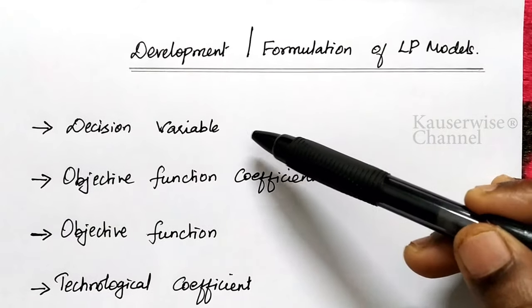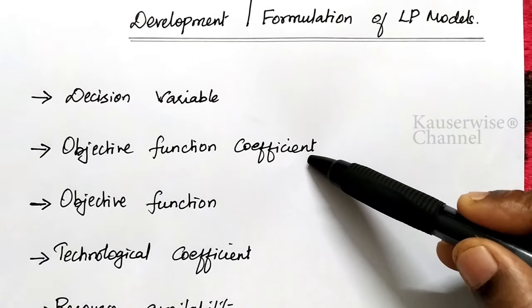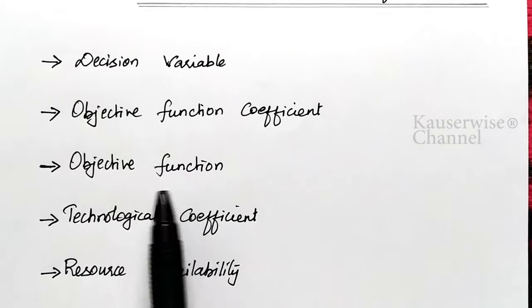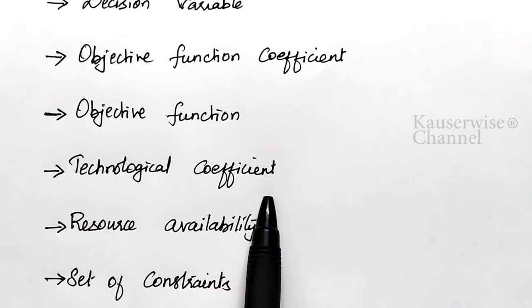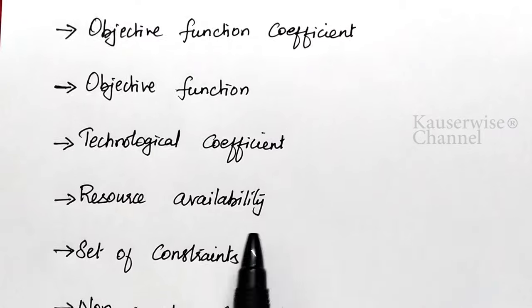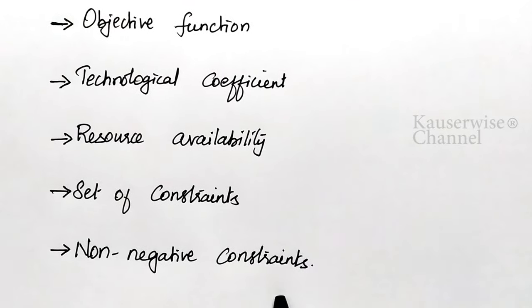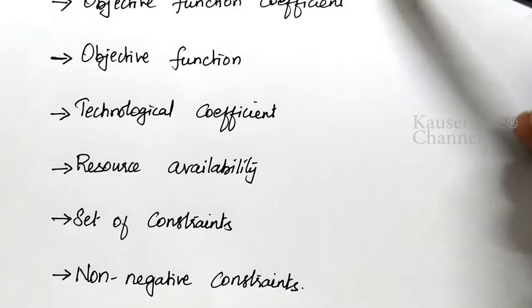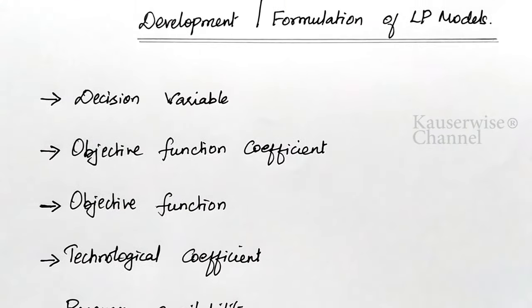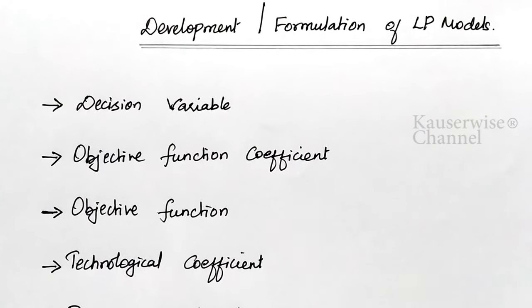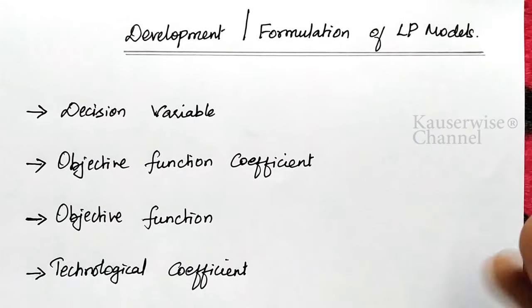The first component is decision variable. The next one is objective function coefficient, and then objective function, then technological coefficient, resource availability, set of constraints, and non-negative constraints. These are the important elements you need to understand before you go for formulation of an LPP model.